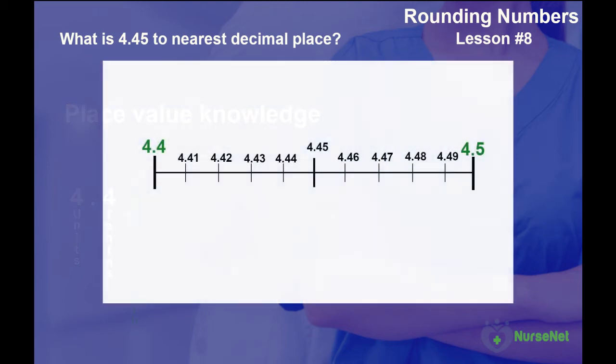So let's look at a number line. Let's look at numbers between 4.4 and 4.5 using hundredths. So we start with 4.4 on the left-hand side, and then we have a 4.41, a 4.42, a 4.43, a 4.44, a 4.45, a 4.46, a 4.47, a 4.48, a 4.49, and then a 4.5.